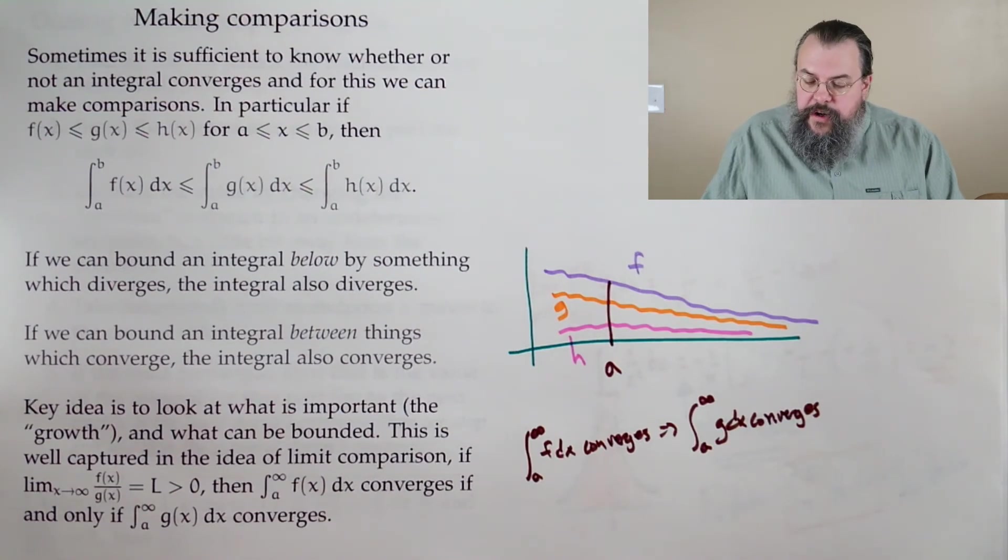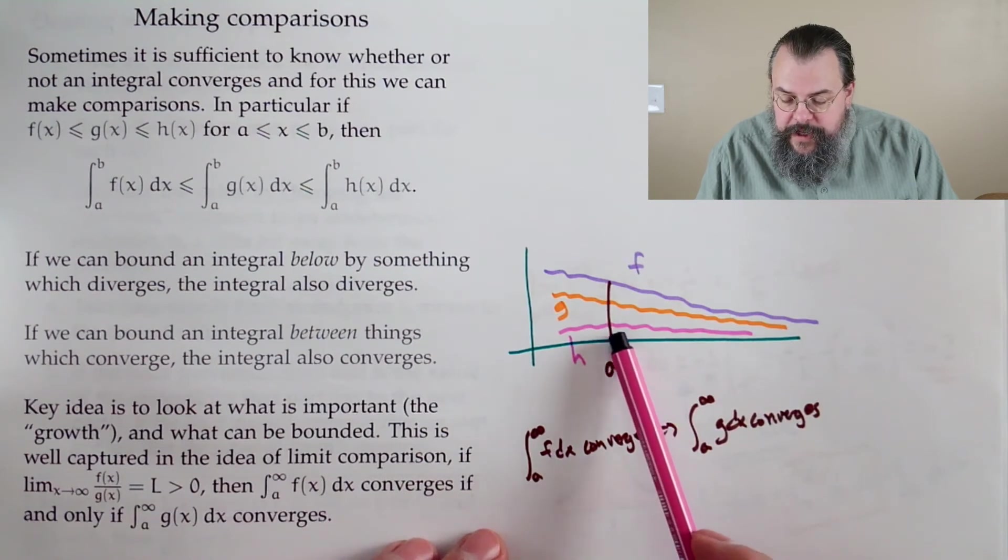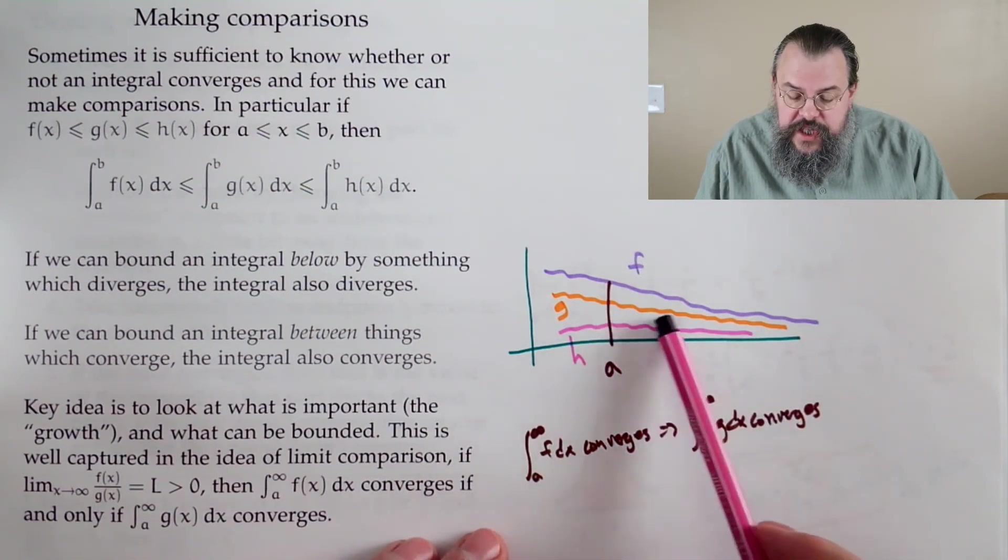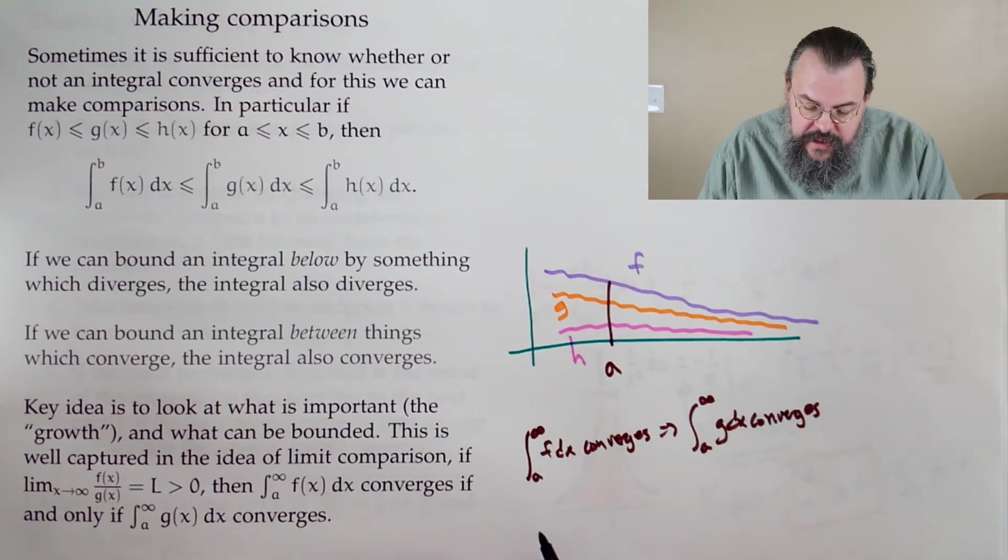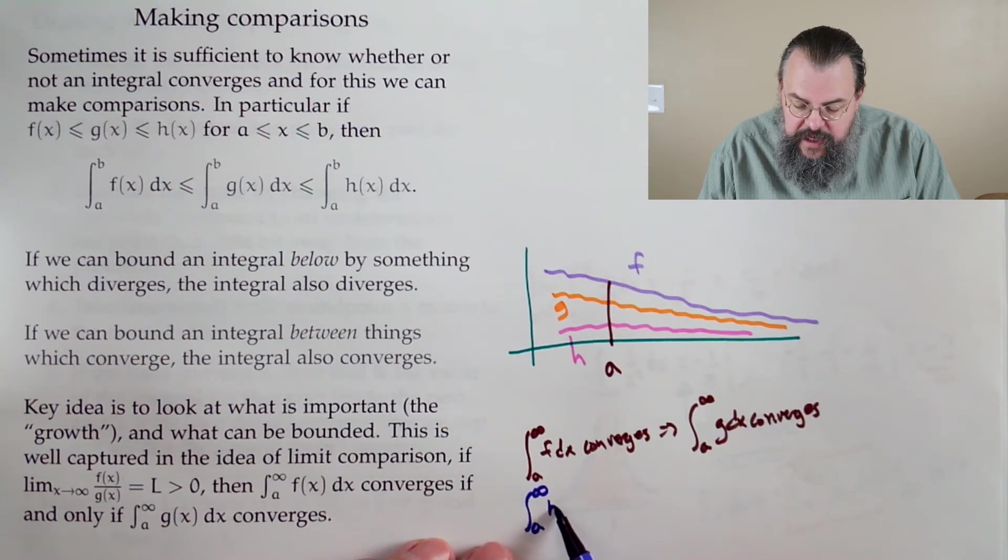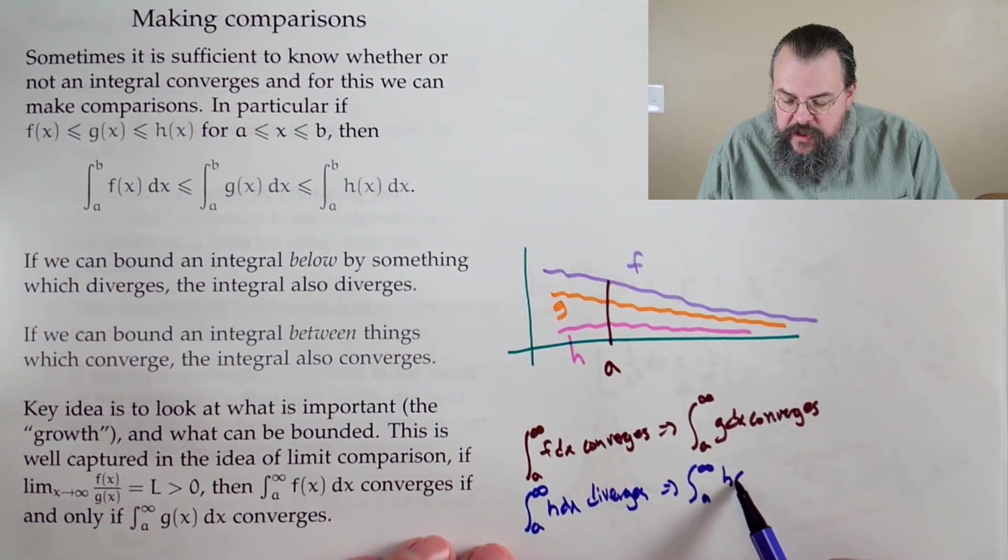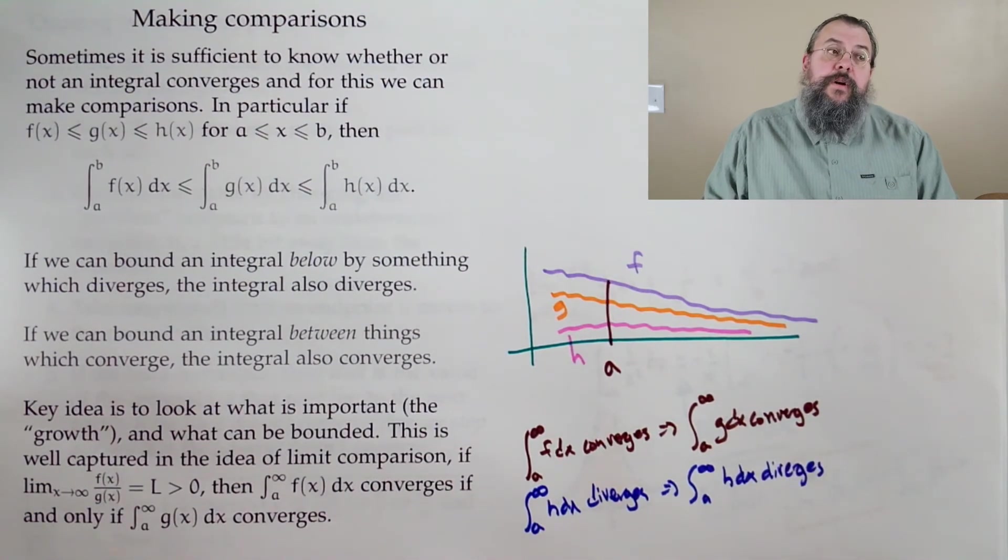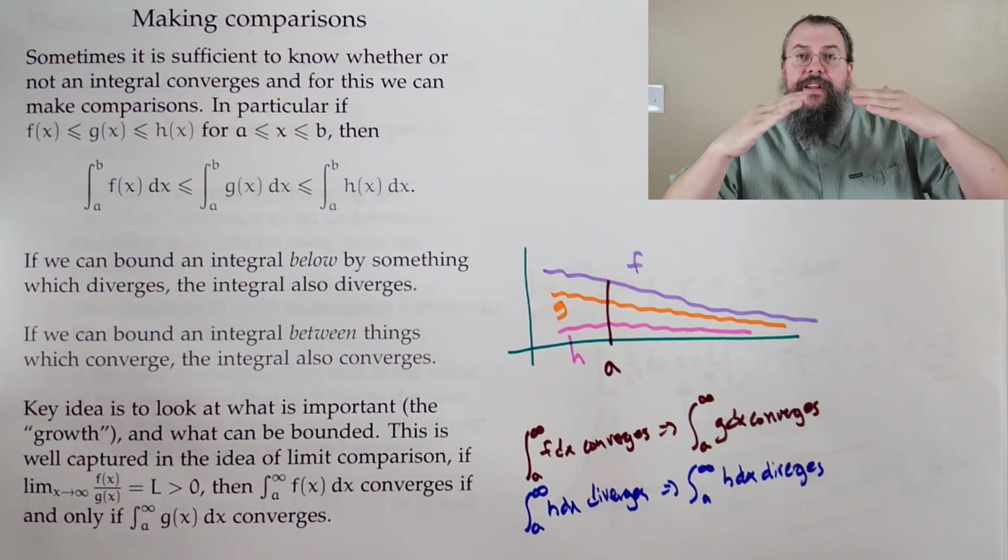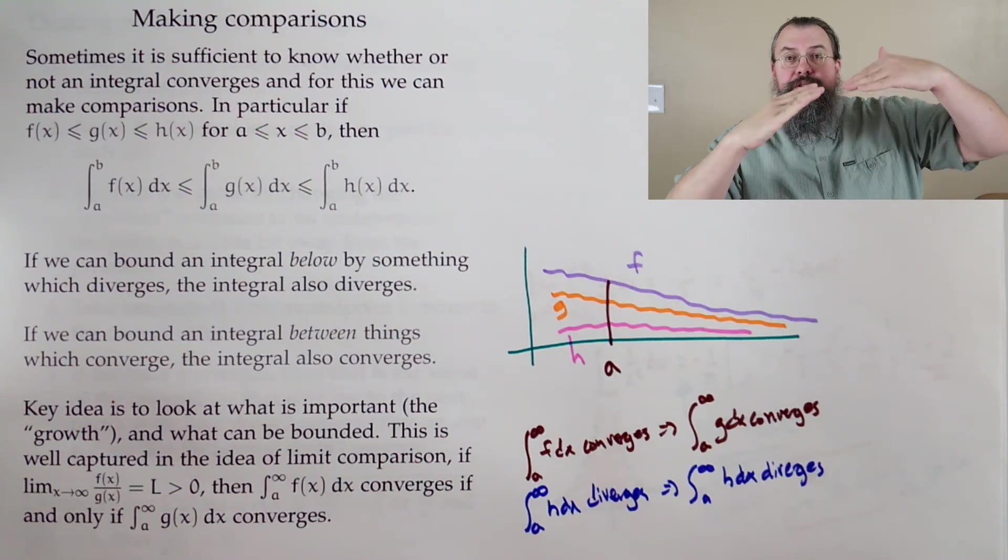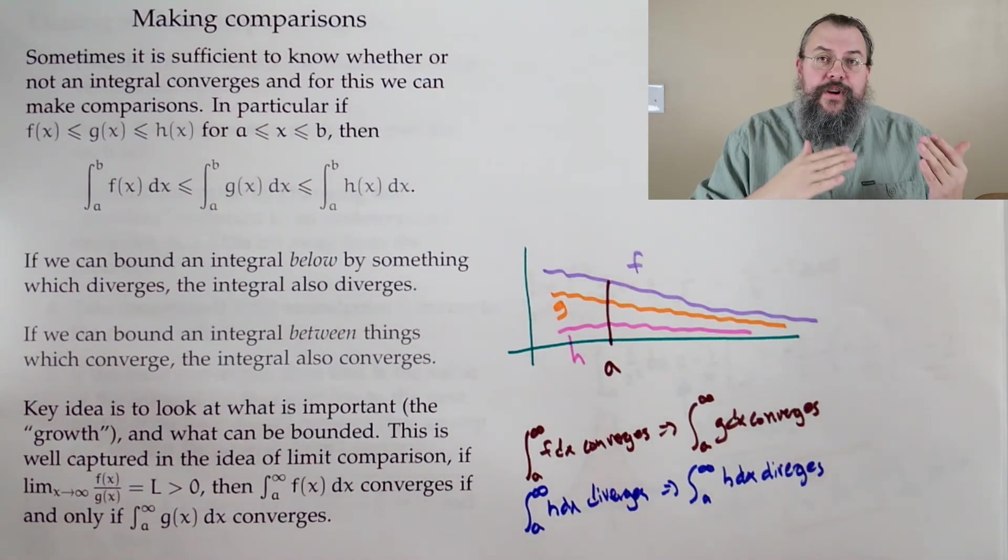But we can also go the other direction. Suppose h of x, suppose we knew that had infinite area when we integrated. Well, what about g? g is h plus more. So that says in the other direction, if the integral from a to infinity of h diverges, then we know that the integral from a to infinity of g also diverges. We can talk about making comparisons. If I think something converges, I want to put it below something which I know converges. If I think something diverges, I want to put it above something which I know diverges.